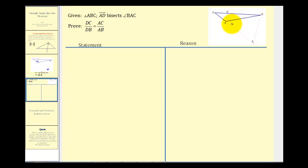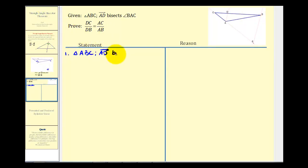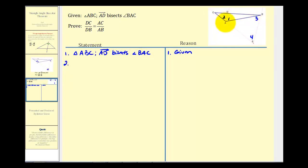We are given Triangle ABC where Ray AD bisects Angle BAC, and we want to prove that the ratio of DC to DB equals the ratio of AC to AB. We start by stating the given: Triangle ABC where Ray AD bisects Angle BAC. We label the angles: angle one, angle two, angle three, and angle four. Because Ray AD bisects Angle BAC, we know angle one is congruent to angle two by the definition of angle bisector.